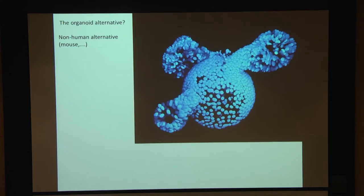The last discussion point was the organoid alternative. The main limitation for immunology is that there are no immune cells in organoids, so they would mostly focus on epithelial differentiation — which still has significant interest.